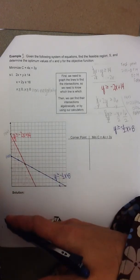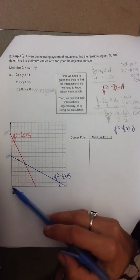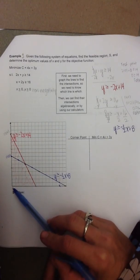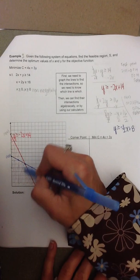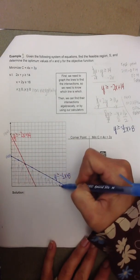So points beneath the line, and the side that 0, 0 is on, give me a false statement. Once again, I'm going to cross out or shade the false side.